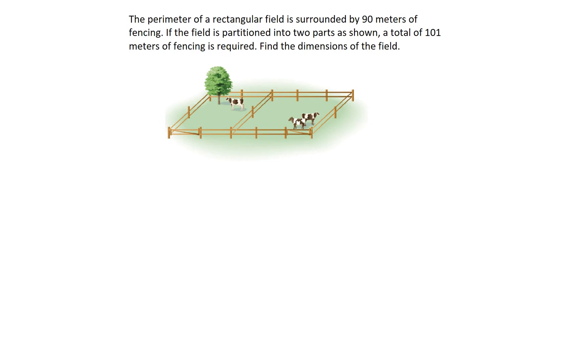The perimeter of a rectangular field is surrounded by 90 meters of fencing. If the field is partitioned into two parts, as shown, a total of 101 meters of fencing is required. Find the dimensions of the field.